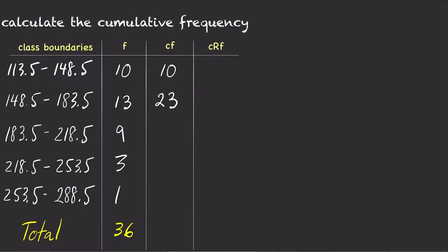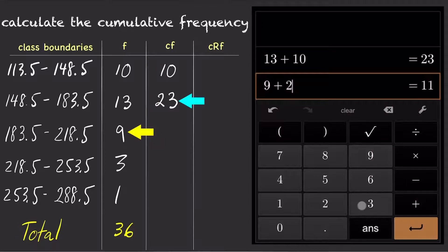And for the third class, the frequency is 9 plus all the frequencies for every class before it. So the cumulative frequency is 9 plus 13 plus 10, which is 9 plus 23 equals 32.